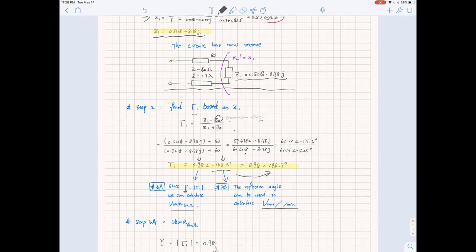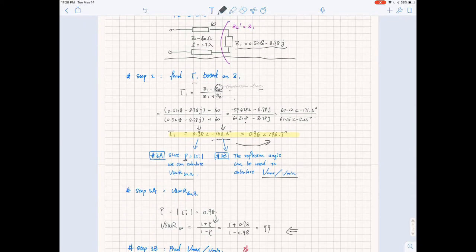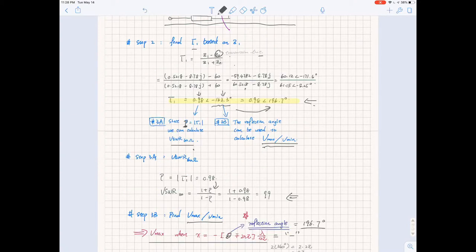After plugging everything in, this is the answer that we will get. You can see that there are two components of the reflections: one is the magnitude and the other one is the angle. For the magnitude we can use it to calculate the VSWR in the transmission line because the reflection index is basically the absolute value of the magnitude.